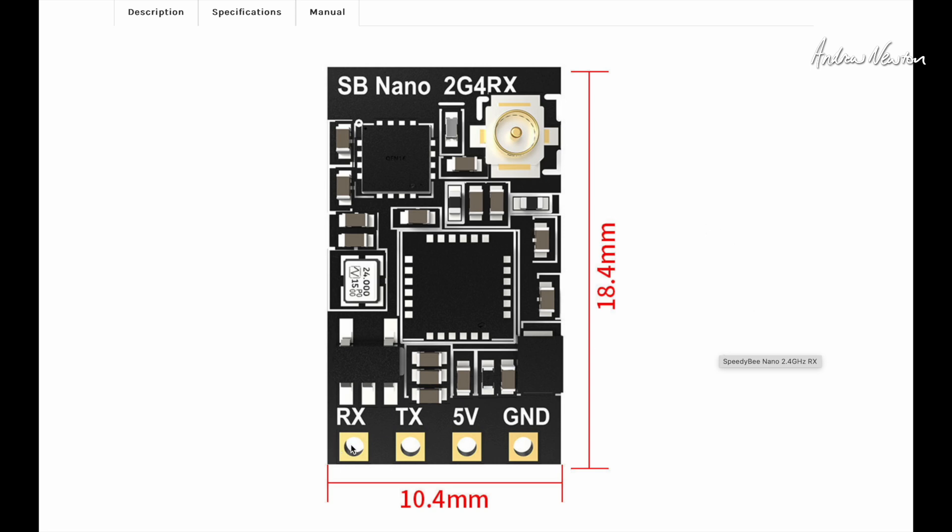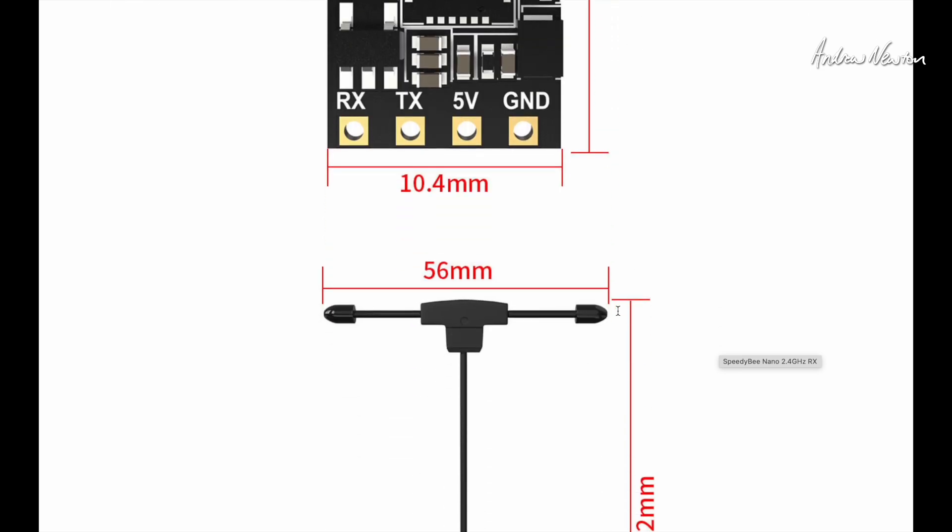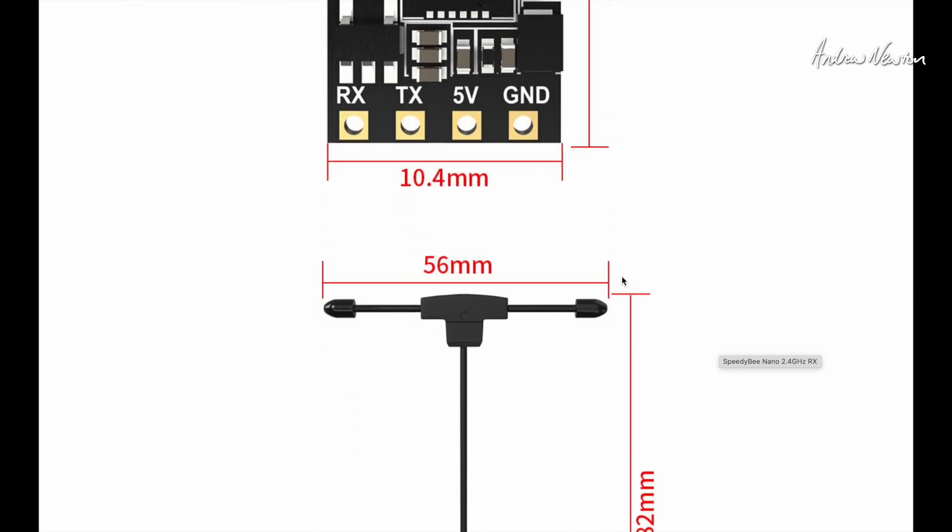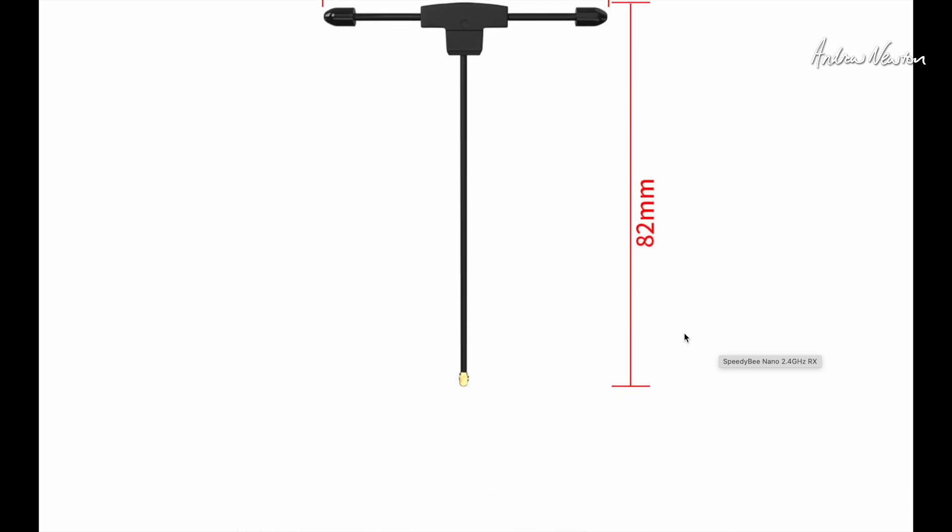There's the layout here. RX TX 5 volts and ground. 10.4 by 18.4 millimeters. Absolutely tiny. 56 millimeter T antenna. 82 millimeter length.